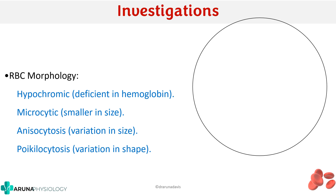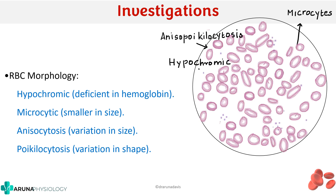On the peripheral smear, the RBCs in iron deficiency anemia are smaller than normal (microcytic), and the central pallor is much larger due to decreased hemoglobin (hypochromia). Anisocytosis means variation in size — some RBCs are big, some small. Poikilocytosis means variation in shape — some cells appear pencil-shaped. These features depend on the severity of anemia but are characteristic findings of iron deficiency anemia.